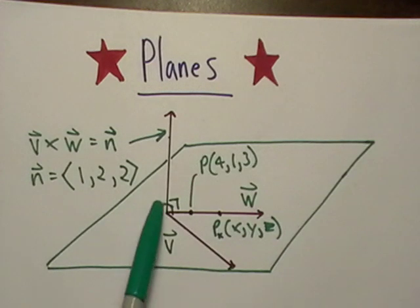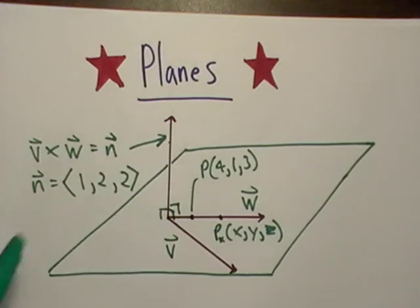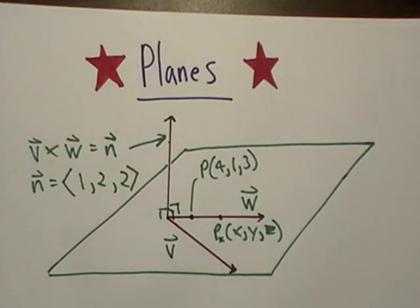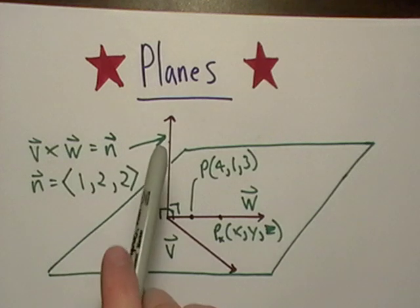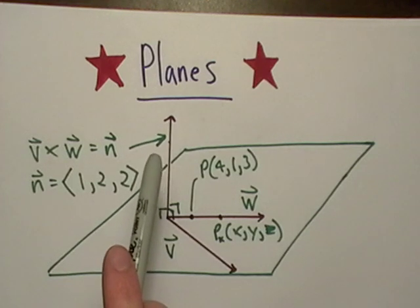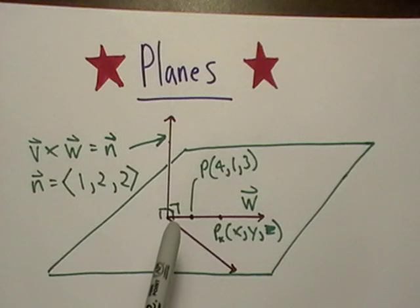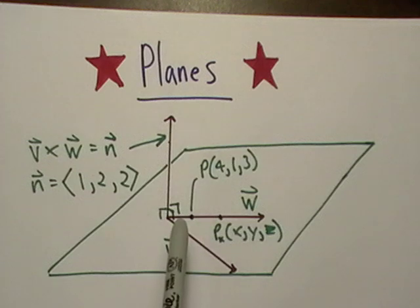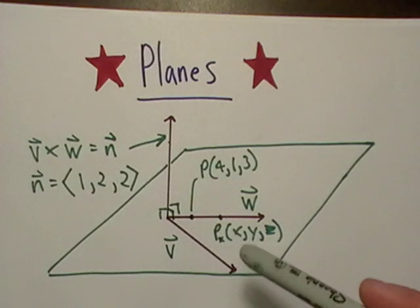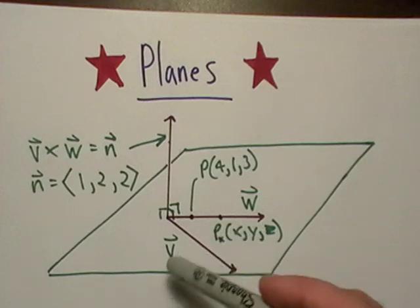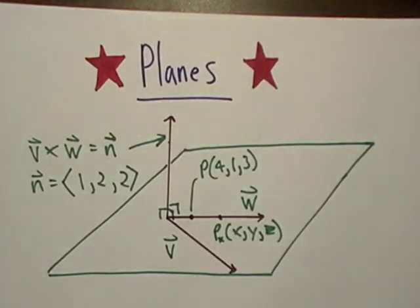The second piece of information you need is a vector that's normal to the plane — and by normal, I mean perpendicular. Normal and perpendicular are synonymous. If they don't give you the normal vector, they would have to give you the components of both vectors V and W, and you would cross V and W to get N. That's probably the easiest way to do it.